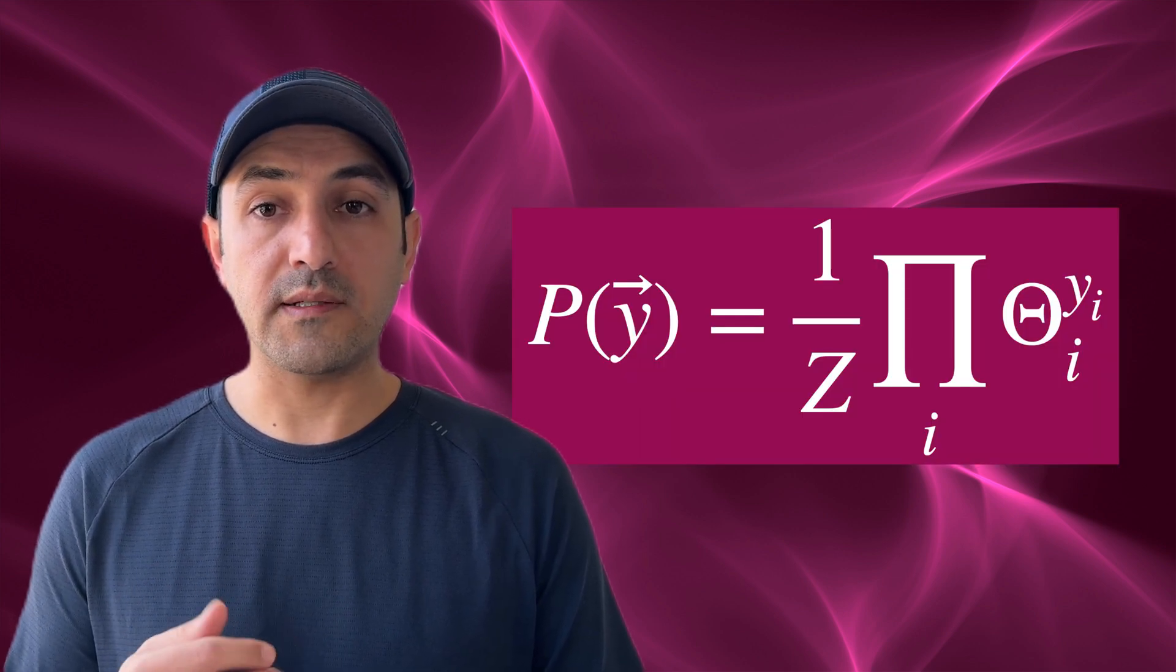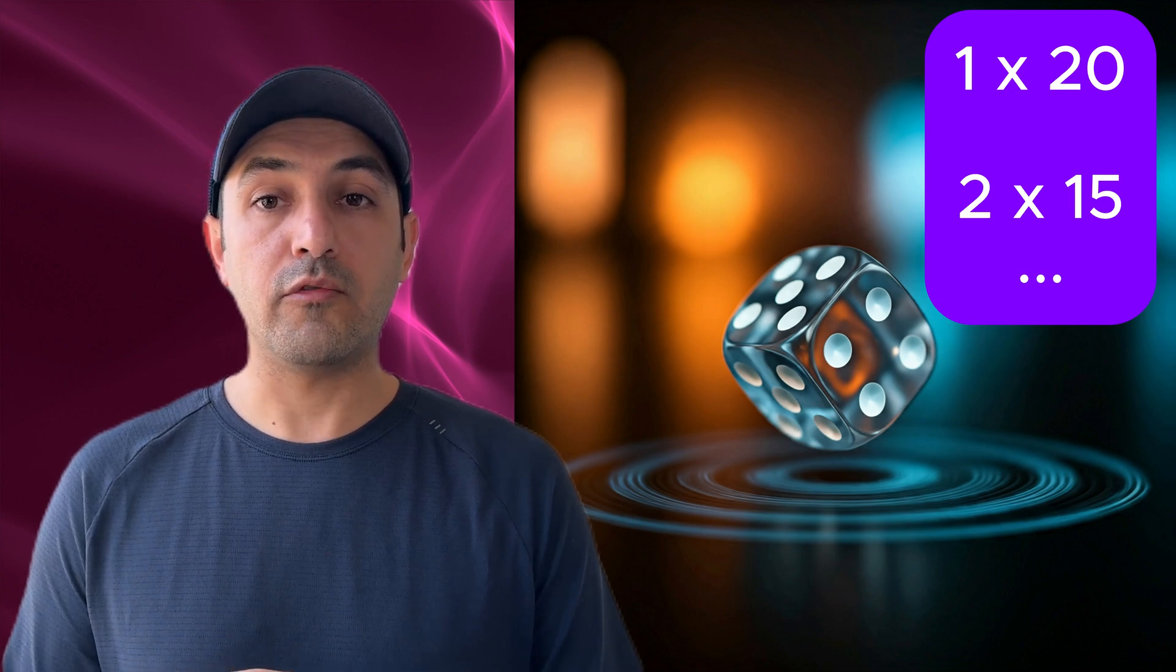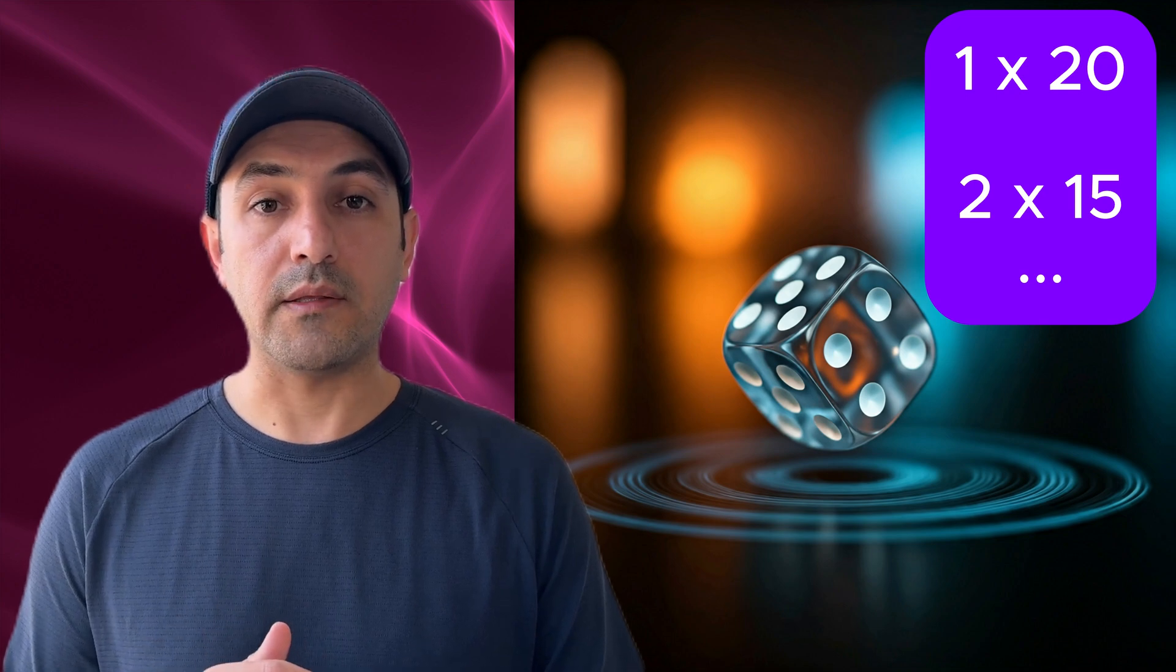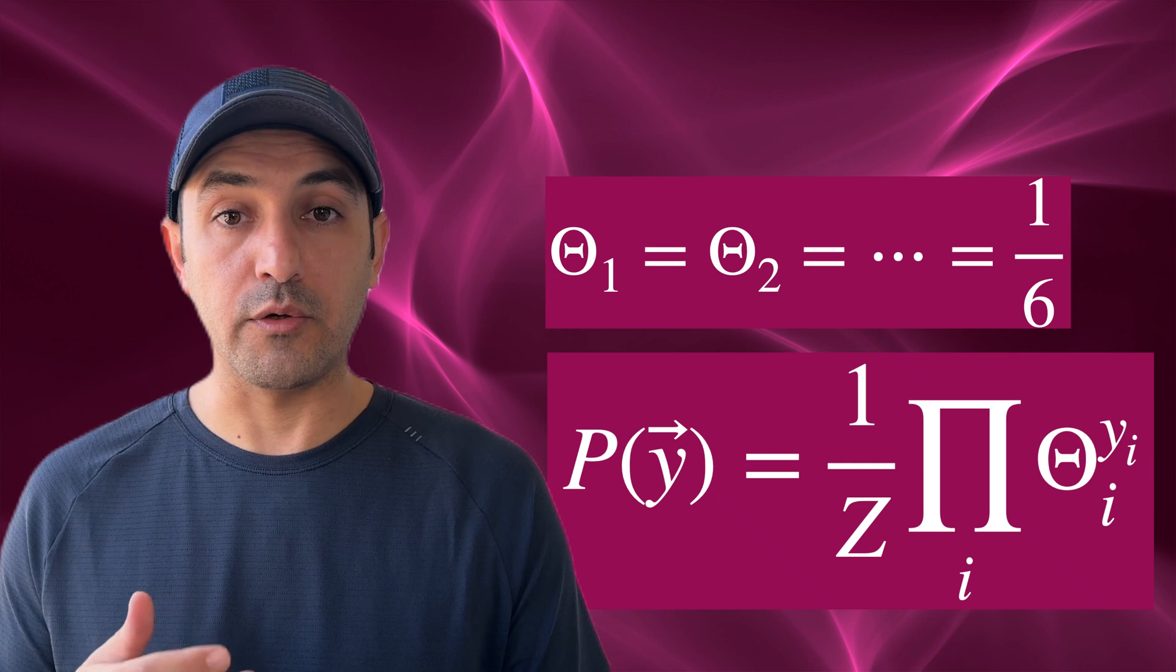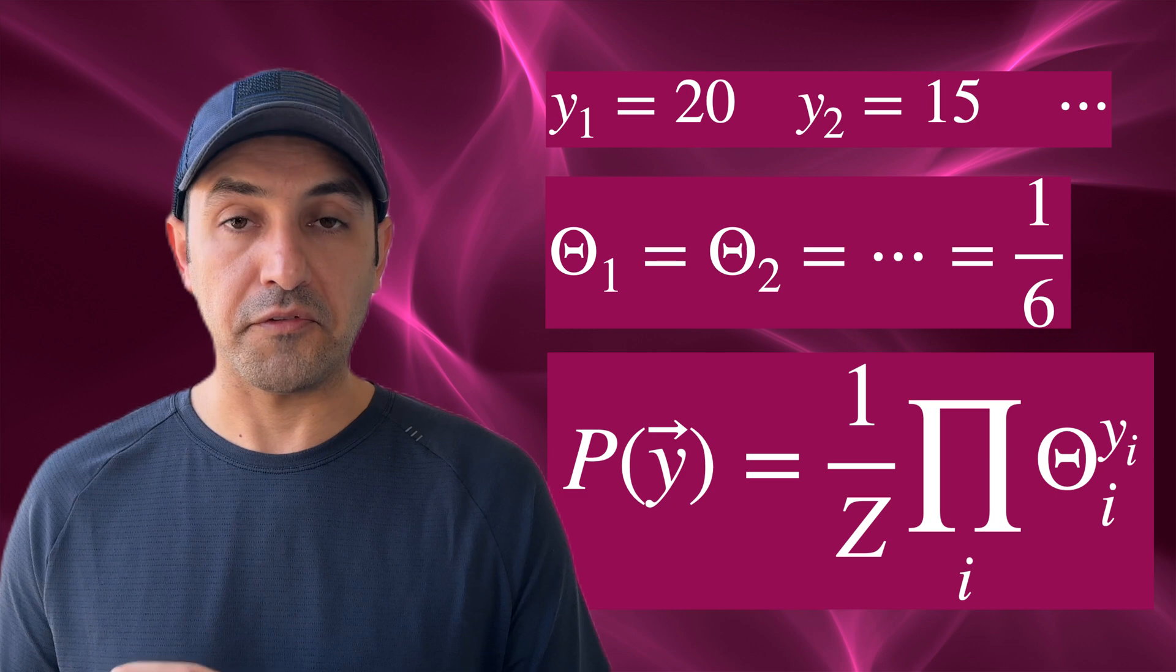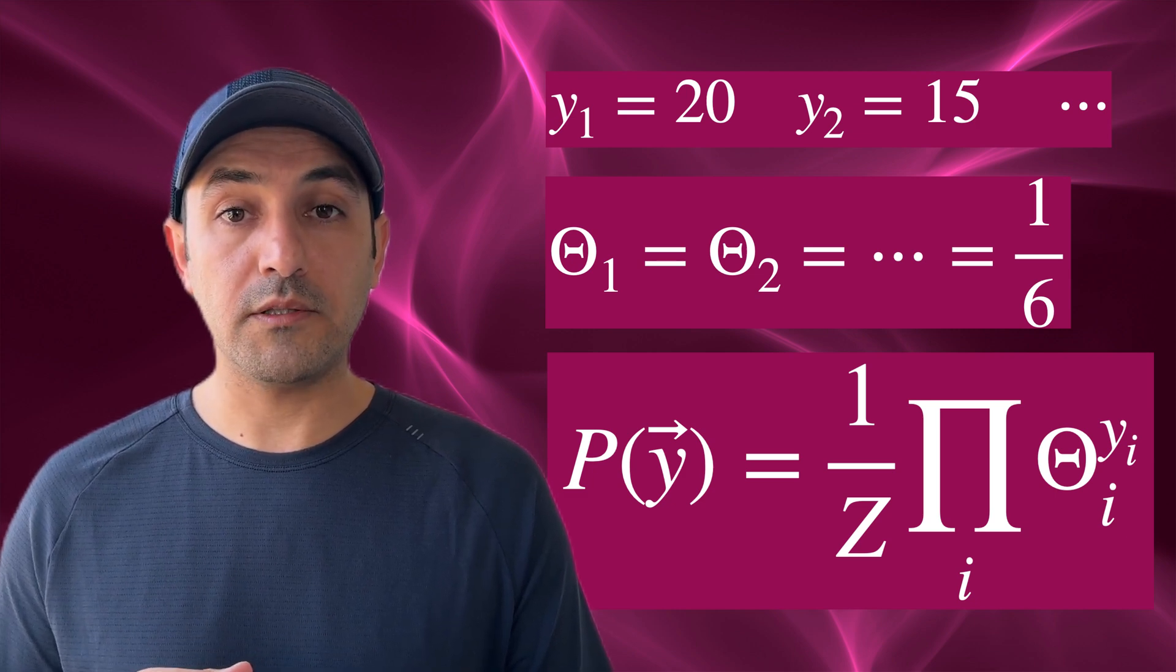Multinomial probability is a rule that tells us how likely it is to get a specific combination of outcomes when there are several categories and repeated trials. For dice, the categories are the six possible numbers, and the repeated trials are the 100 rolls. Now let's use the example of throwing the dice 100 times. If the dice is fair, each number has an equal chance of 1 over 6 of appearing on any roll. To find the probability of getting exactly 20 rolls of 1, 15 rolls of 2, and so on, the multinomial probability function combines these chances for all the outcomes. What makes this approach so powerful is that it doesn't just apply to dice. Multinomial probability is used in many real-world situations, like predicting word frequencies in a book, determining voting results in an election, or analyzing DNA sequences. In all these cases, it helps us calculate the chance of specific patterns happening.